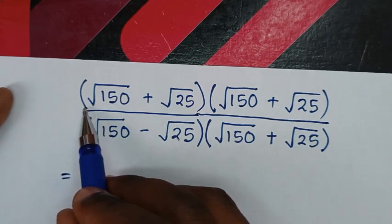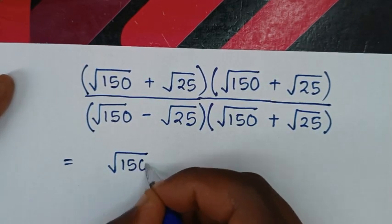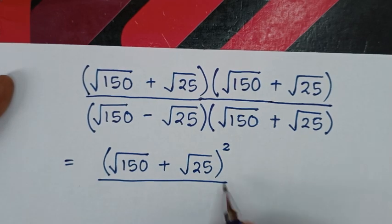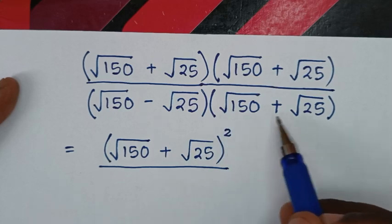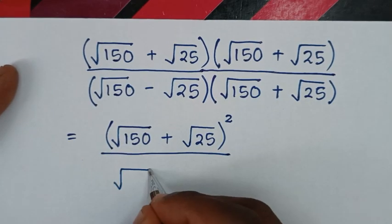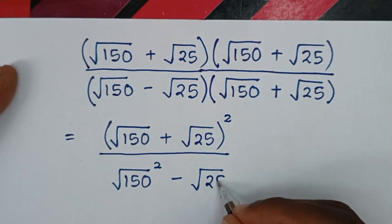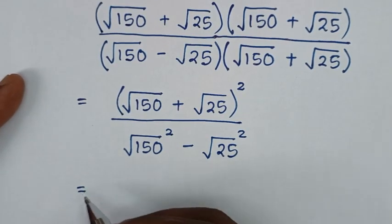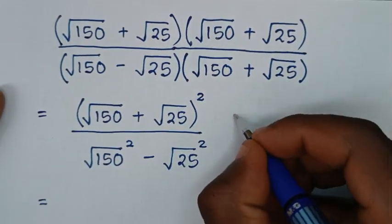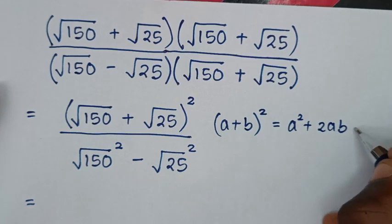Then it will be equal to: square root of 150 plus square root of 25 times this and this — they're the same — so it will be square root of 150 plus square root of 25, bracket, squared. Then over, in the denominator, square root of 150 minus square root of 150 plus — this times this is in the form of a difference of squares — so it will be square root of 150 squared, then minus square root of 25 squared. The numerator is in the form (a plus b) squared, which equals a squared plus 2ab plus b squared.